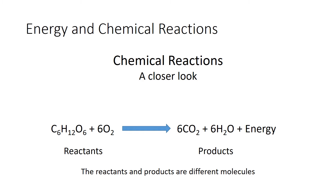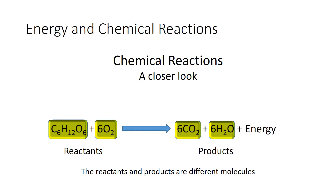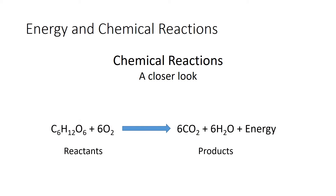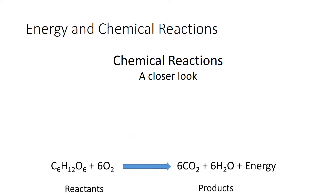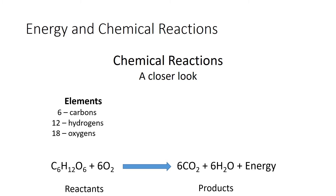An important point is that the reactants and the products are all different molecules. The reactants are glucose and oxygen; the products are carbon dioxide and water — four different molecules, two reactants and two products. In cellular respiration, the bonds holding the elements together in the different molecules are being broken, and the molecules are shuffled around to form new molecules. But the elements are the same on both sides: six carbons, 12 hydrogens, and 18 oxygens on both sides. In any chemical reaction, the number of elements must be the same in both reactants and products — we're just breaking bonds and forming new ones to create new molecules.